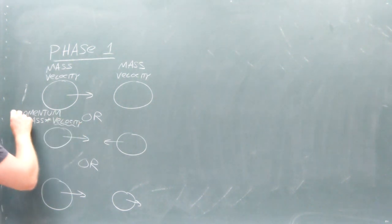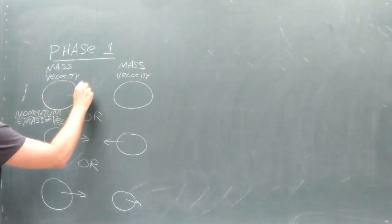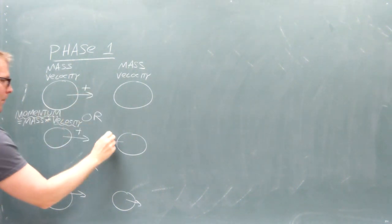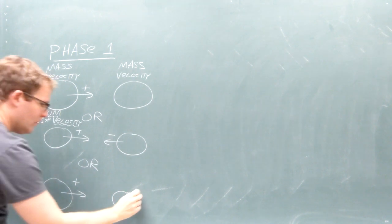Since velocity can be a positive or negative number to indicate direction, the momentum can also be a positive or negative number to indicate direction.